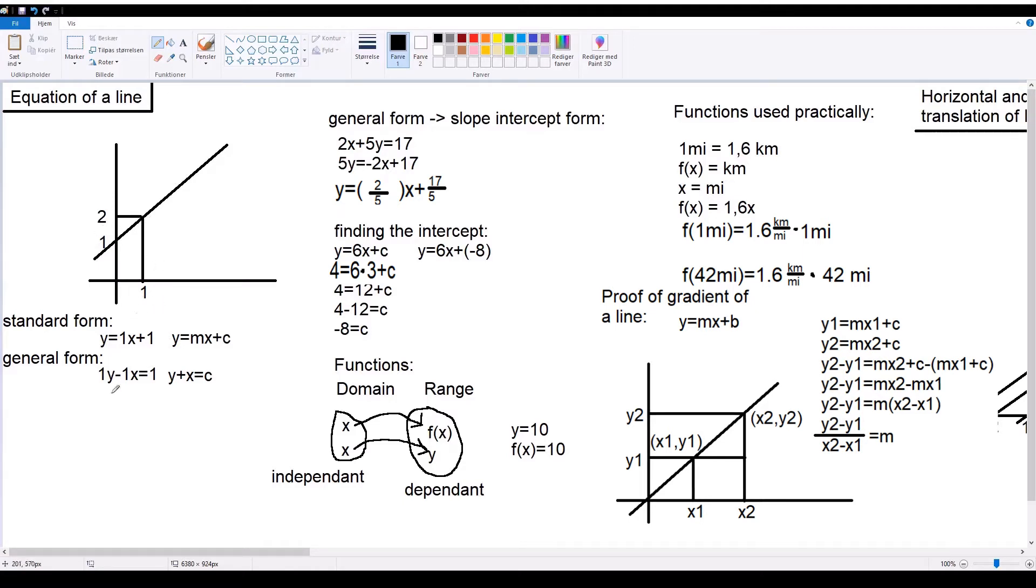There's also the general form, which looks like this: y plus x equals c. In this case, you would write 1y, because it moves 1y, and 1x, because it moves 1x, plus 1, because c is where it intersects the y.